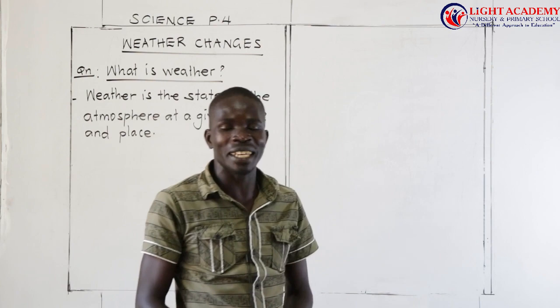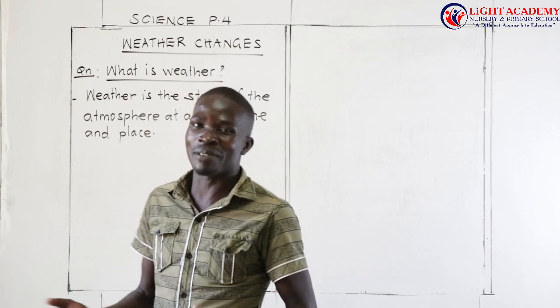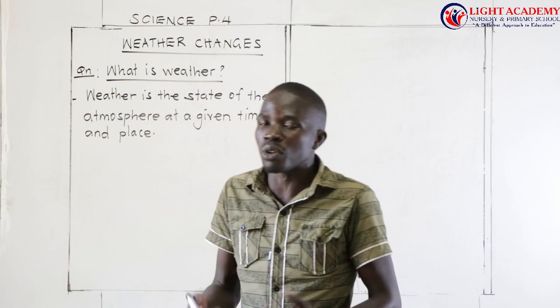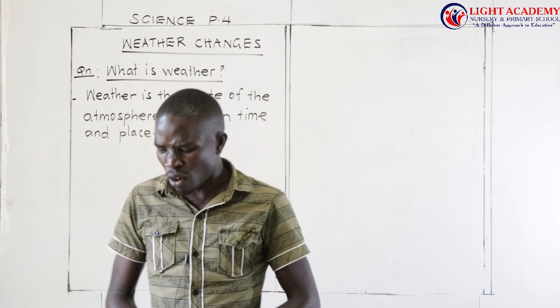So in science, weather is simply the state of the atmosphere at a given time and place. That is what our teachers in primary 2 taught us about weather. Or if you want to say it another way, it is the condition of the atmosphere at a given time and place.